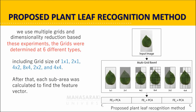Proposed plant leaf recognition method: in this figure, the input images were forwarded to the multi-grid process to divide the images into sub-regions. Then each sub-region was calculated using three techniques of feature extraction. Each technique was processed by principal component analysis to decrease the amount of the feature vector. The grids were determined by six different types, including grid sizes of 1x1, 2x1, 4x2, 8x4, 2x2, and 4x4.